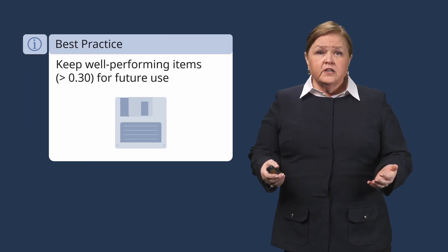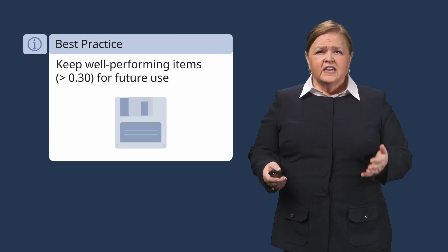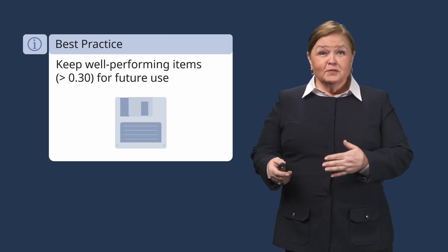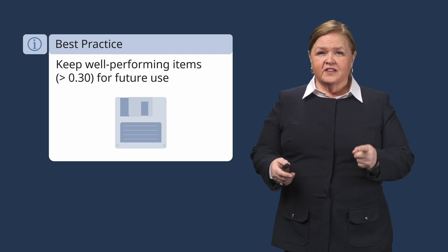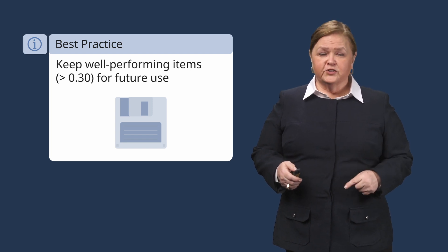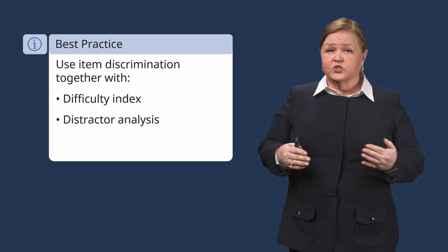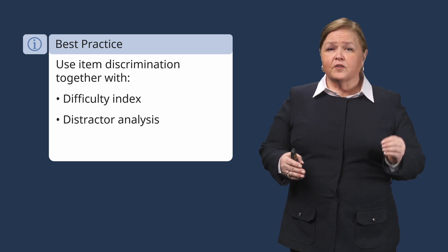For questions with good discrimination — that's above 0.30 — consider adding similar questions to your item bank for future exams. These are good questions. Remember, item discrimination is just one tool in your assessment toolkit. Use it alongside other metrics like difficulty level and distractor analysis for the most complete picture.